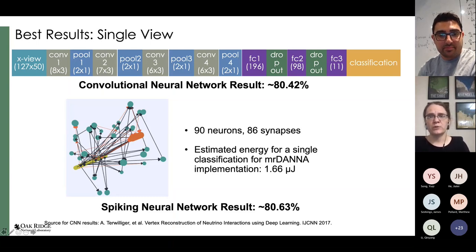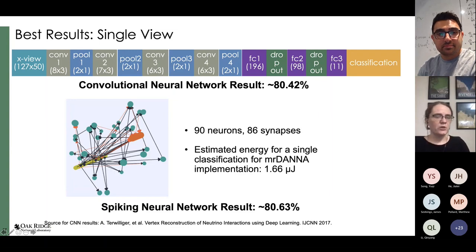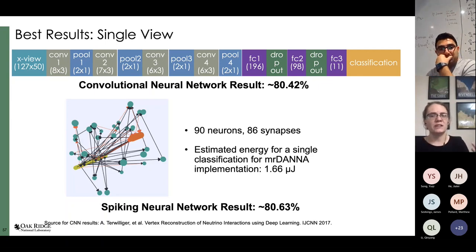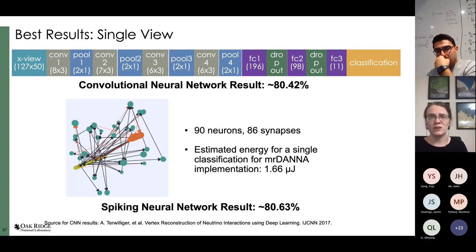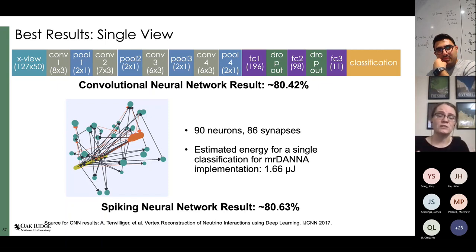What's really interesting is the size of the networks produced. The spiking neural network has 90 neurons and 86 synapses — it's not even fully connected. By comparison, just the fully connected layer of the convolutional neural network has 98 neurons — bigger than the entire spiking neural network. We estimated we could do this with a memristive neuromorphic implementation at about 1.66 microjoules per classification. Even if you don't care about power with a school bus-sized detector, the smaller network runs faster — and if data is coming really fast in big science experiments, you want to process it in real time.